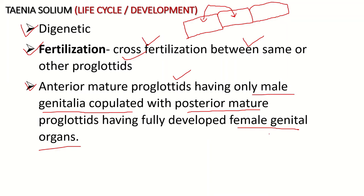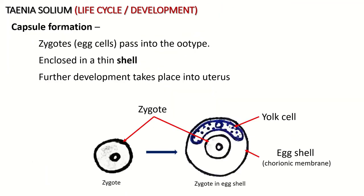In Taenia solium, internal fertilization takes place inside the parasite. After injection of spermatozoa into the vagina, the spermatozoa swim down and settle into the seminal receptacle where they are stored. The ova and sperms finally meet in a structure called the fertilization duct, and that process is called fertilization.